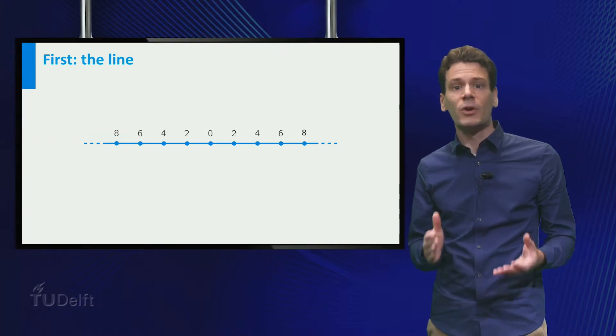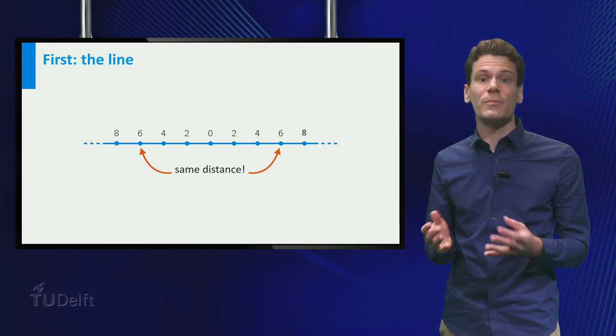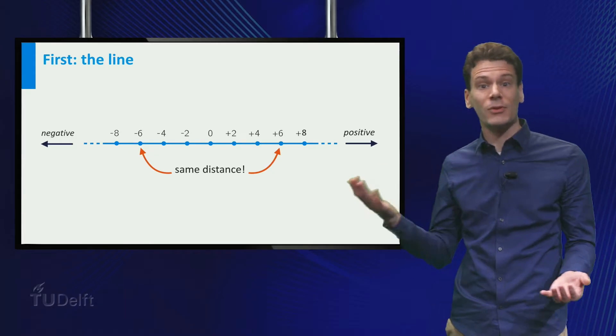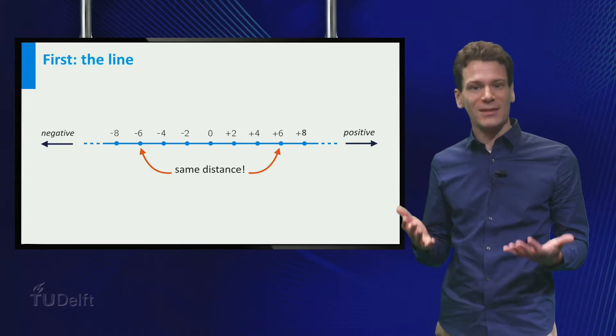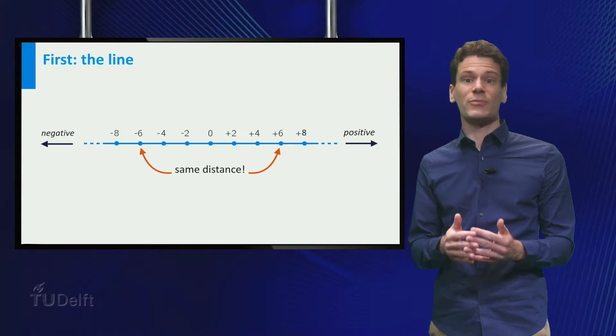There is one problem. Points with equal distance get the same number. We can solve this by using positive numbers on one side of the origin and negative numbers on the other side. This way, each point gets a unique number that indicates its position.